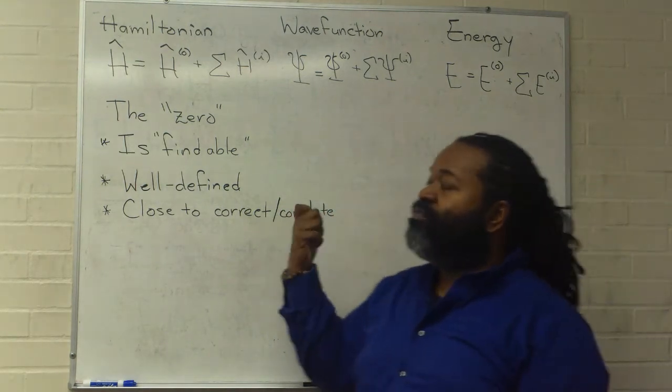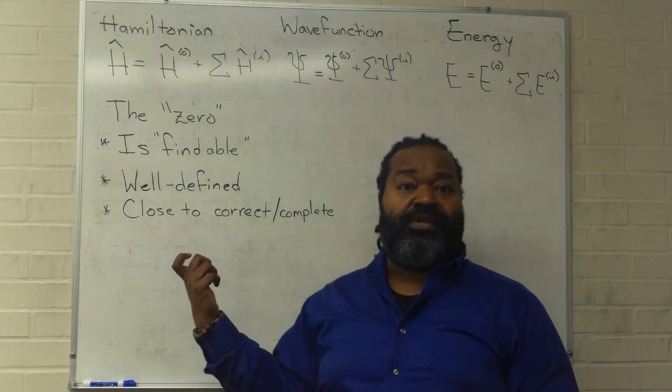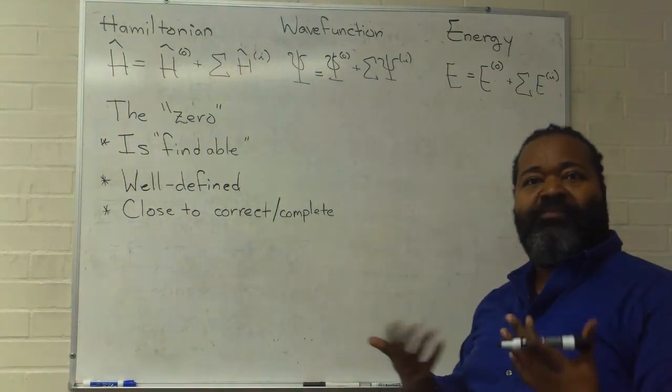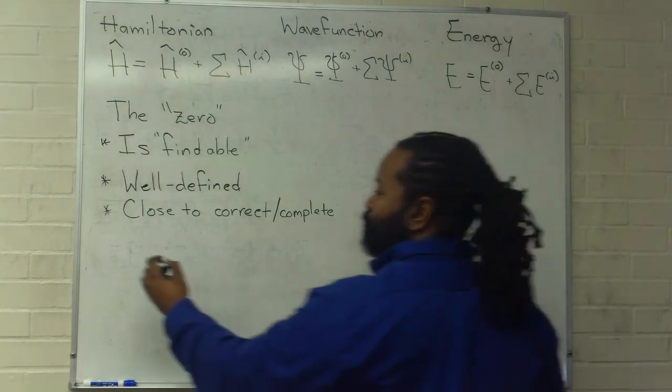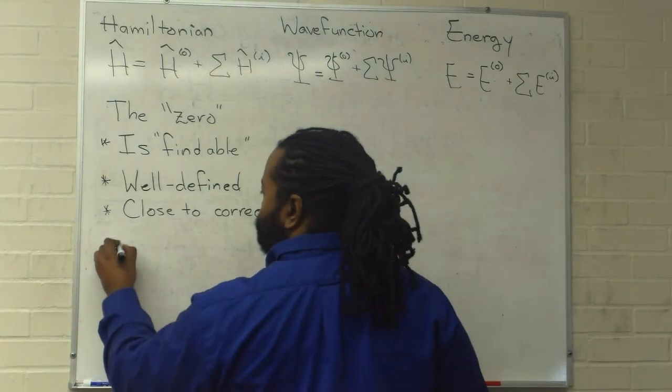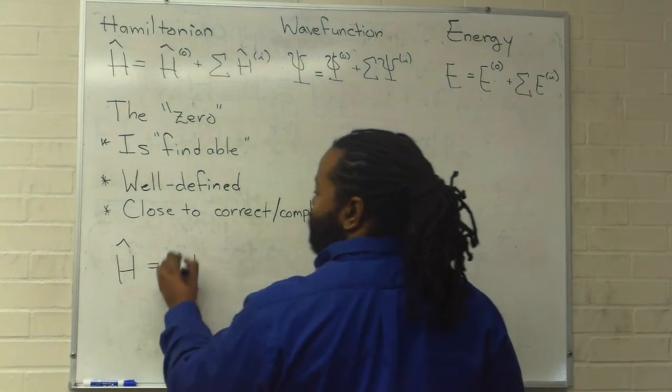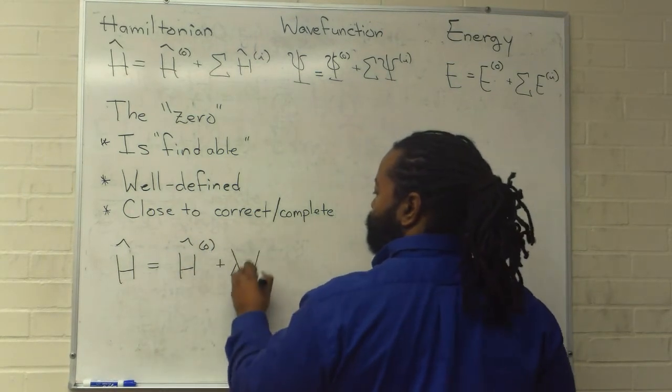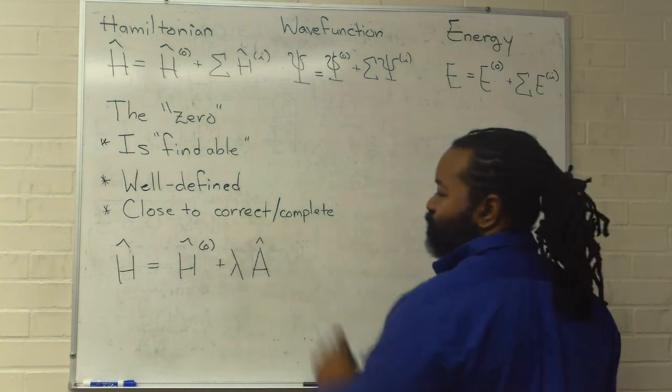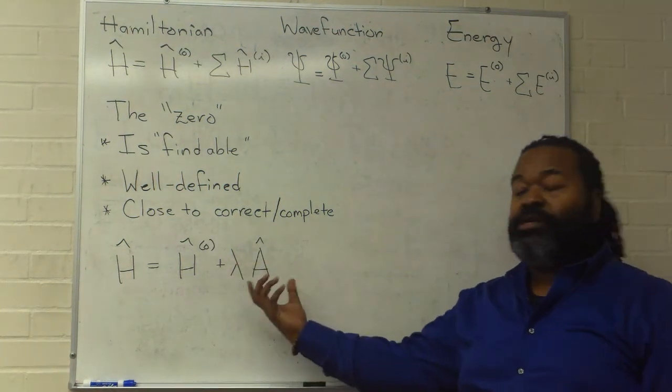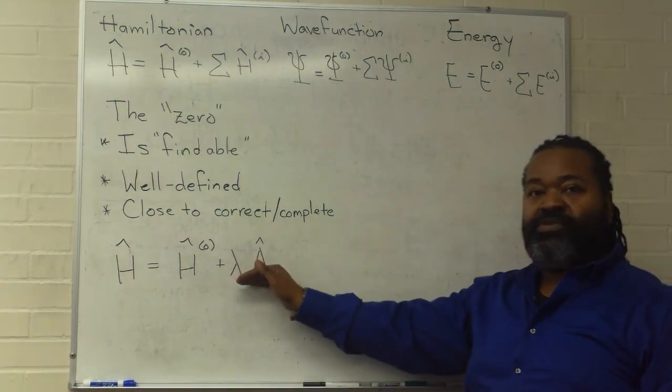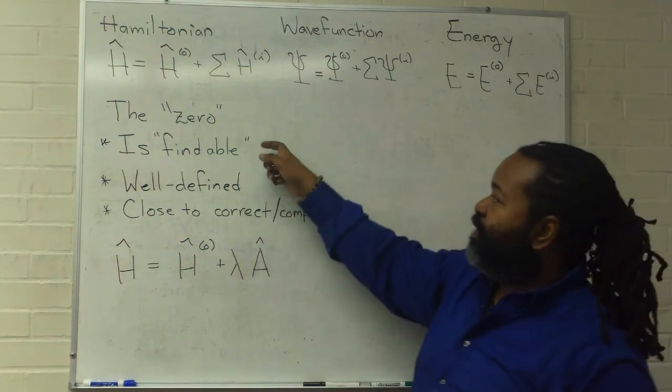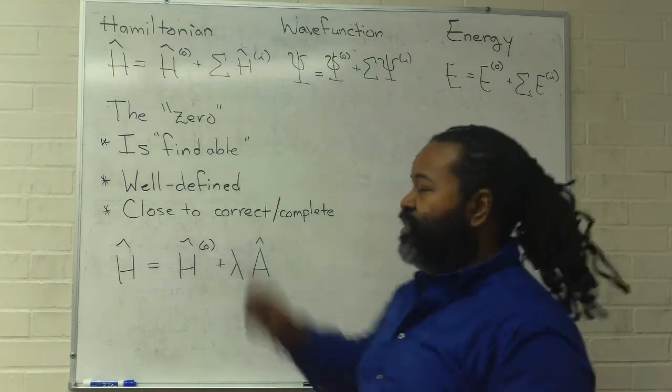And if we have all of that, then what we can do next is simplify these parts into something that may be a little more usable. So we can rewrite the true Hamiltonian as that zero-order part plus some additional portion. This is well-defined because we know what the gap was that made the zero-order part findable.